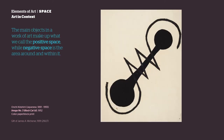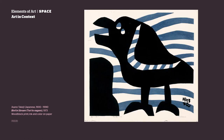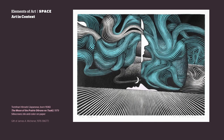The main objects in a work of art make up what we call the positive space, while negative space is the area around and within it. Any shape appearing on a picture plane automatically creates a second shape out of the background area. This second shape is referred to as the negative shape, or the ground shape. The first shape that we see is referred to as the positive shape, or the figure shape. In this image, the white background shape is the negative shape, while the black shape is the positive figure shape. Figure shapes create ground shapes.